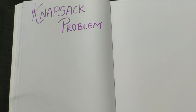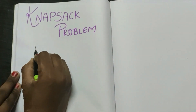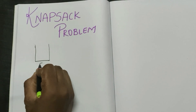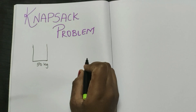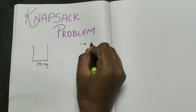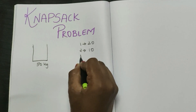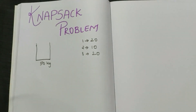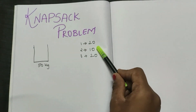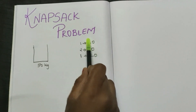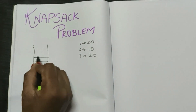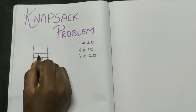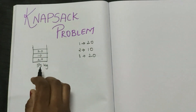In this video we'll be learning about the knapsack problem, also known as fractional knapsack. To understand it, consider a sack that can hold only 50 kg. You have n number of objects: the first weighs 20 kg, the second 10 kg, and the third 20 kg. The sack's capacity is 50 kg. If you fit all three objects, they fit perfectly since 20 + 10 + 20 = 50.